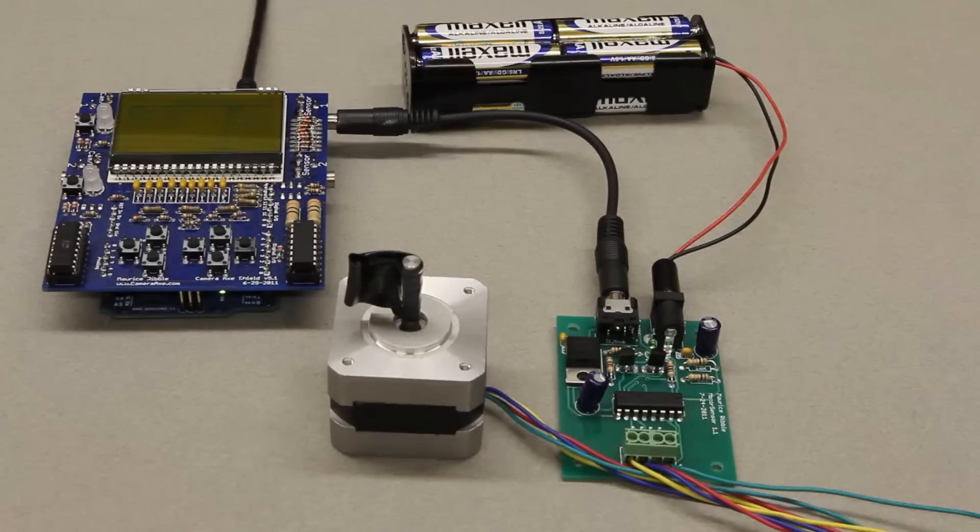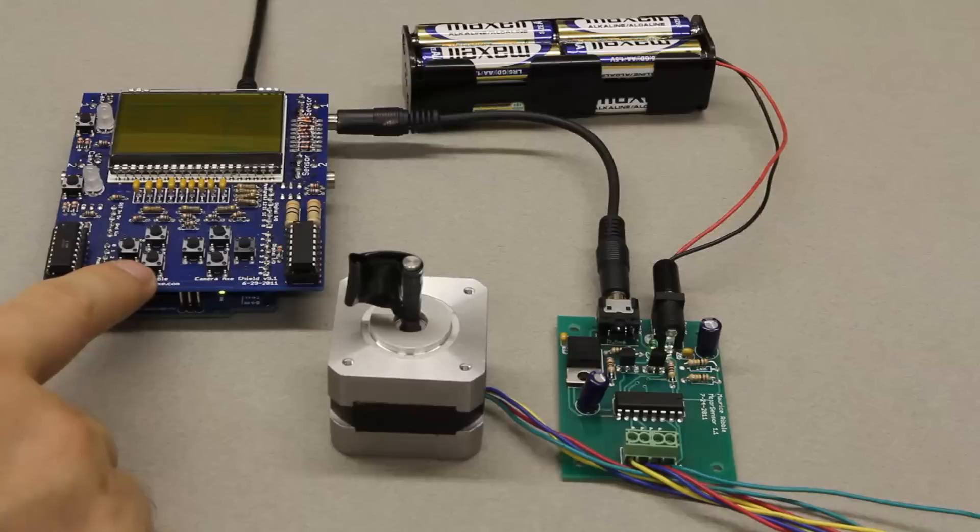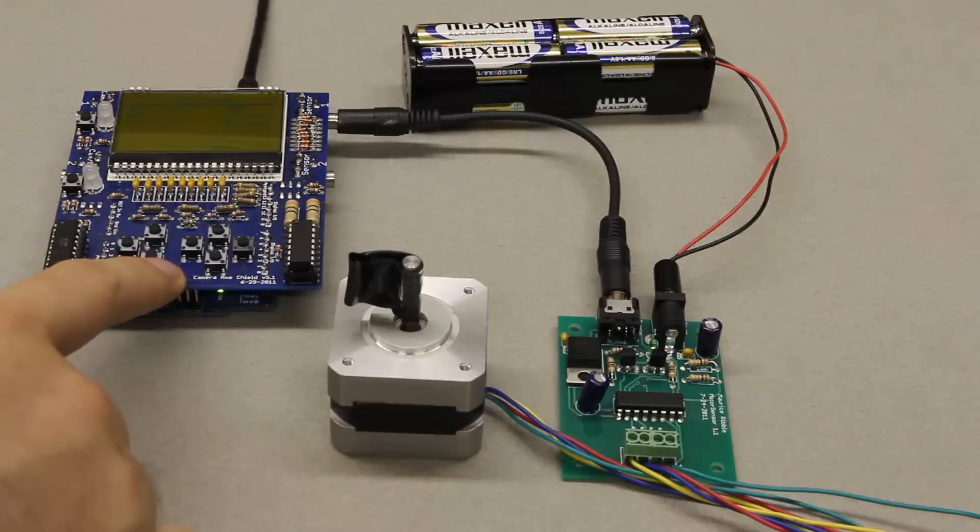Here's a basic overview of the motor sensor. First off, you need to be using the camera axe 5 or the camera axe 5 shield. It's not compatible with the camera axe 4 or earlier and this is the camera axe 5 shield.